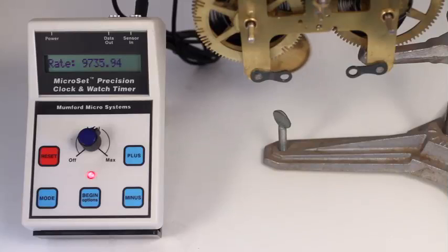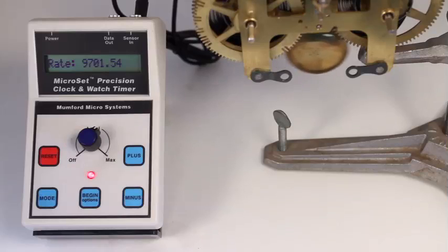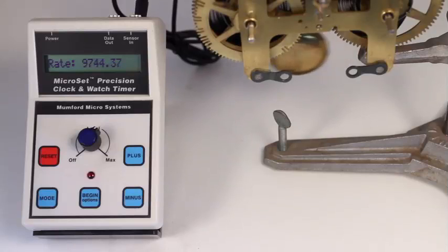The blinking pattern of the LED will now be different. It will stay on for longer at each tick. When the LED is on, the blanking window is active and microset is deaf. When the LED goes off, microset starts listening for the next tick.